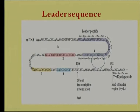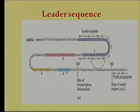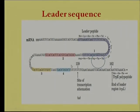The attenuational control involves the leader sequence mRNA region, which plays a key role in deciding the fate of the transcription process. The leader sequence in the trp mRNA can be divided into four regions: region 1, region 2, region 3, and region 4, spanning about 160 nucleotides. Region 1 and 2 are complementary but never pair. Region 2 and 3 are complementary, and region 3 is also complementary with region 4. The 2-to-3 and 3-to-4 base pairings decide the fate of transcription.